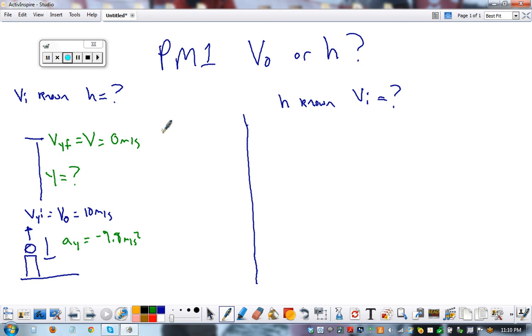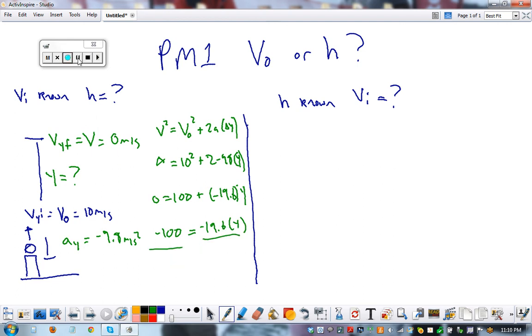The formula that we use that has all of this is velocity squared equals velocity times 0 plus 2 times A times your height. 0 equals 10 squared plus 2 times negative 9.8 times our height. 0 equals 100 plus negative 19.6 times height. Negative 100 equals negative 19.6 times height. And then we divide. And there's your answer. 5.1 equals height.